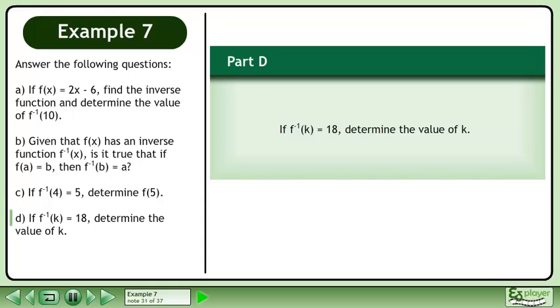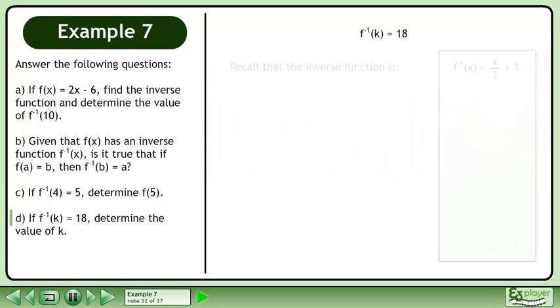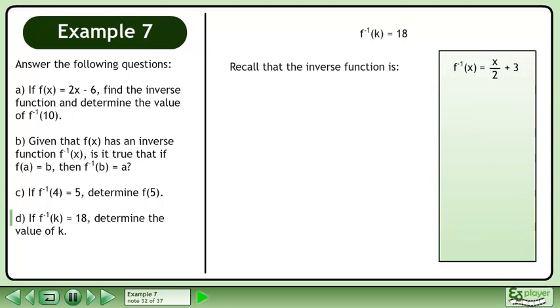Now we'll move on to part d. If f inverse at k equals 18, determine the value of k. Recall that the inverse function is f inverse of x equals x over 2 plus 3. Replacing the function input with k gives us f inverse at k equals k over 2 plus 3.